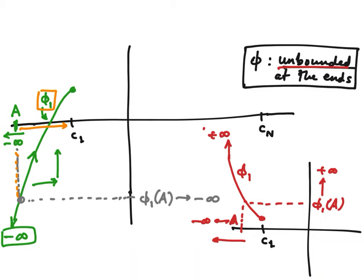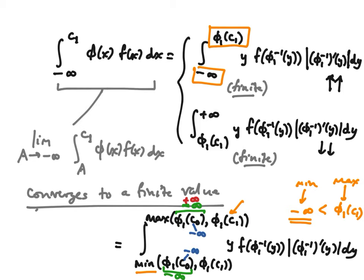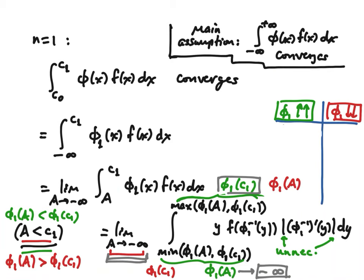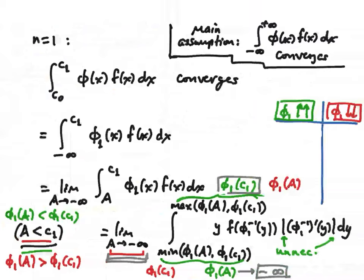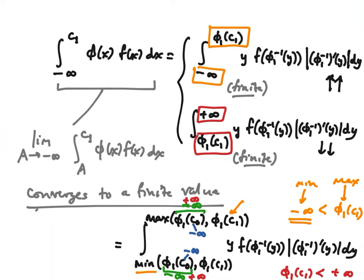In both cases we can express the formula in the exact same way — using the minimum for the lower limit and maximum for the upper limit. In the ordinary case with no improper integrals, in the case with φ unbounded at both ends, and even when there's a horizontal asymptote, the answer is expressed by the exact same formula. We just take the minimum between an infinite quantity and a finite quantity, or the maximum, and we understand that minus infinity is less than any finite value, which is less than plus infinity.